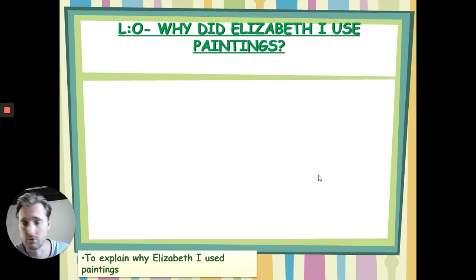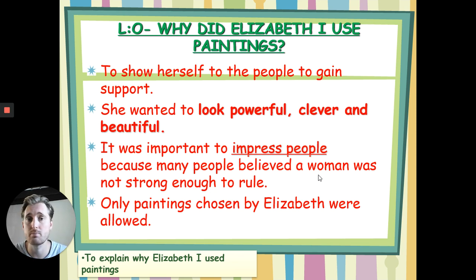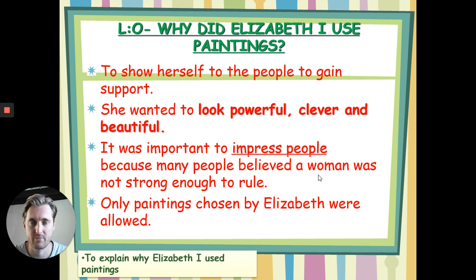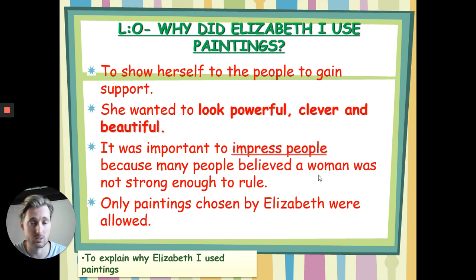So why did Elizabeth the First use paintings? She wanted to show herself off to people and she wanted to look powerful, clever, and beautiful. She wanted to look powerful — you have to remember, she's a woman, and traditionally throughout history women were not allowed to be the head of state. You normally had a king and then a queen. So she wanted to make herself look powerful and clever — as clever as a man at this point. And she cared deeply about her looks, so she wanted to make herself look beautiful. It was important for her because many people believed a woman was not strong enough to rule, and there was a lot of opposition to Elizabeth being queen. But only the paintings chosen by Elizabeth were allowed.